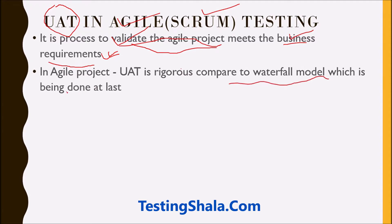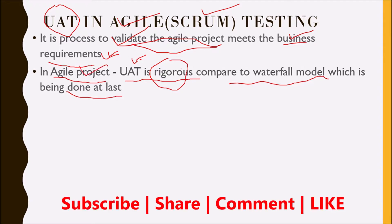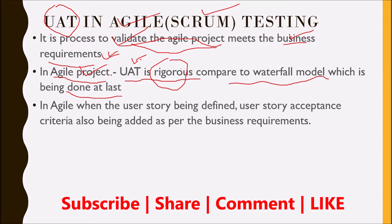The cost of fixing those issues would be a very costly affair in the waterfall model because it is done at the last stage. In Agile projects, UAT is done almost on a sprint-by-sprint basis — we do UAT testing very rigorously in Agile projects. That is a main advantage of UAT being tested in Agile.